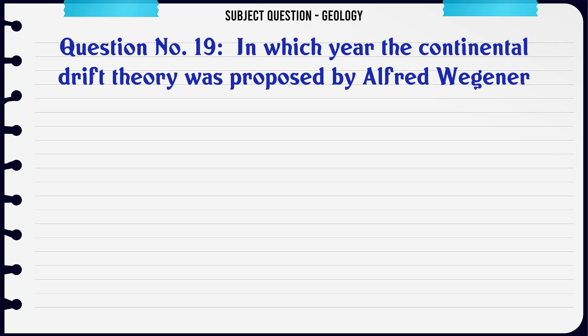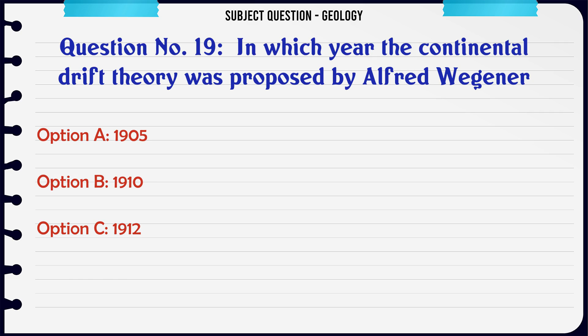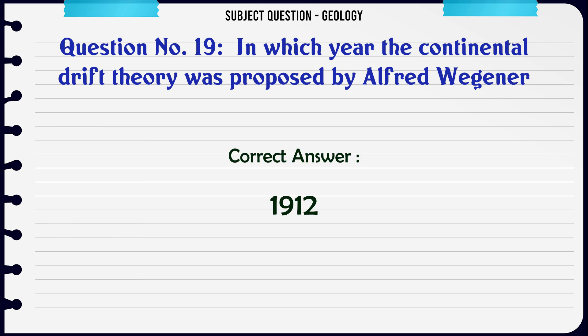In which year was the continental drift theory proposed by Alfred Wegener? A. 1912. B. 1910. C. 1920. The correct answer is 1912.